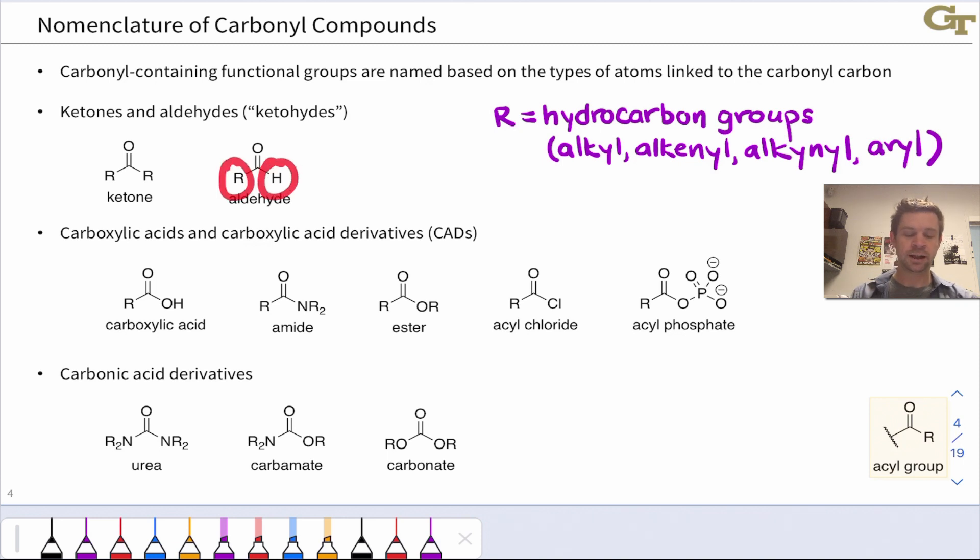When two hydrogens are linked to the carbonyl carbon, that's formaldehyde. When we have just one, that is some other aldehyde. In a ketone, we've got two hydrocarbon groups linked to the carbonyl carbon.